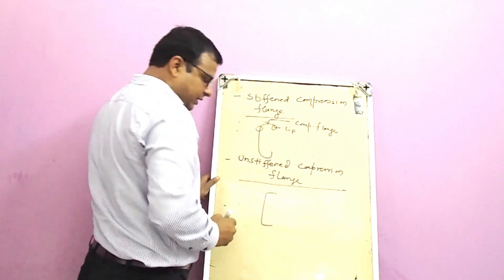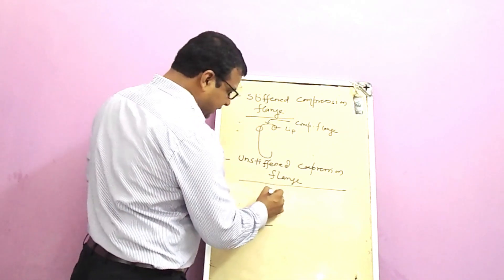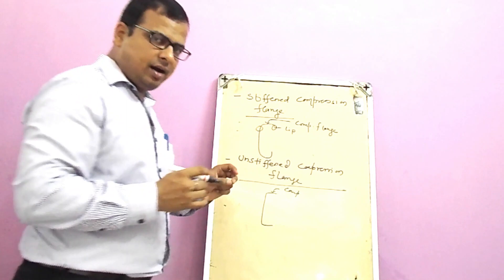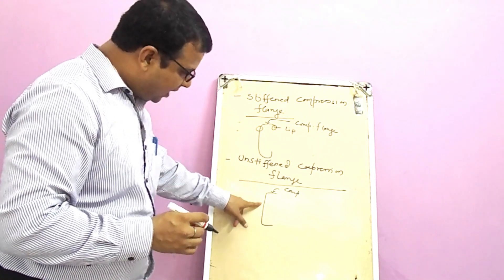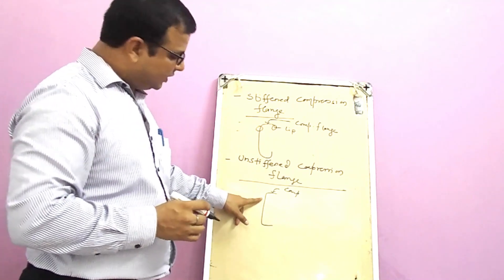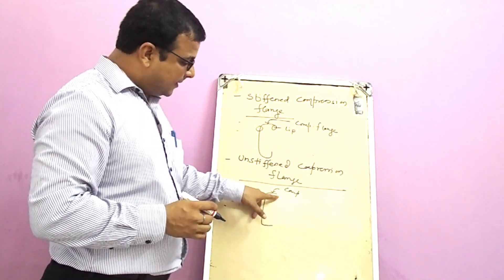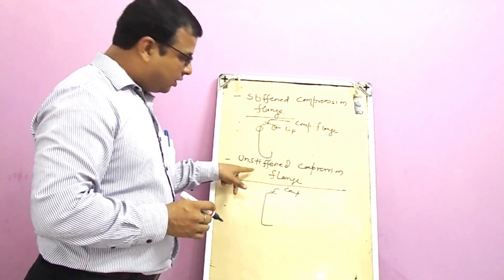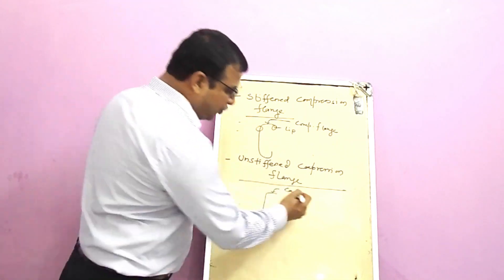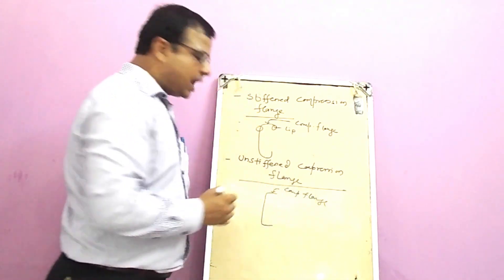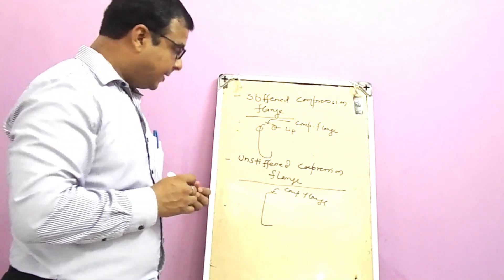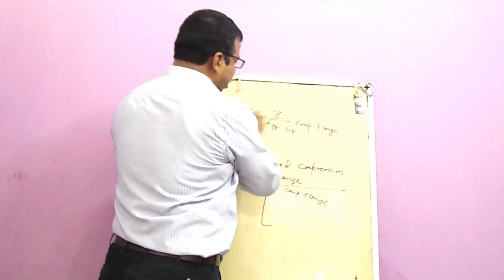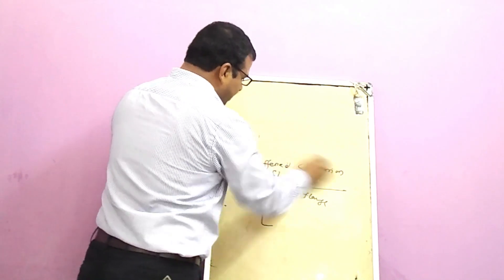The unstiffened compression flange is one where stiffening is provided on one side but at the other end there is no member providing stiffness to the compression flange. That is why it is called an unstiffened compression flange.